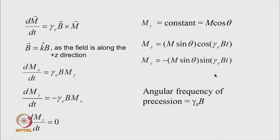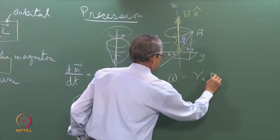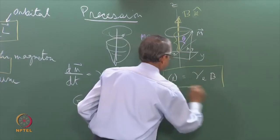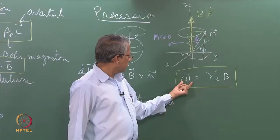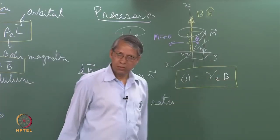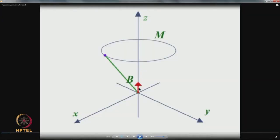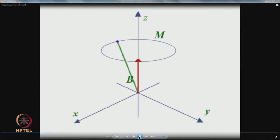These equations are easy to solve. The solution is: M_x = M sinθ cos(gamma_e B t), and M_y = −M sinθ sin(gamma_e B t). This shows that the angular frequency of precession is given by omega = gamma_e B, meaning the frequency of precession is proportional to the magnetic field. To illustrate this, an animation shows B as the magnetic field (red arrow) and the magnetic moment vector (green arrow) precessing. As the magnetic field increases, the precession frequency increases; as it decreases, the precession slows down again.